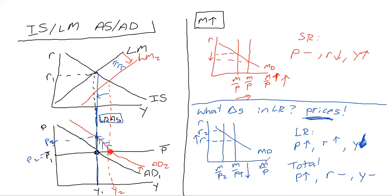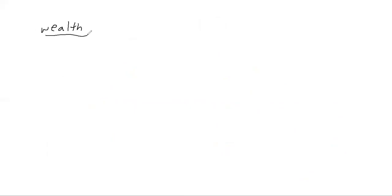That was a straightforward example of how the AS-AD model works with the IS-LM curve. Now let's do another. In this example we're going to see what happens when wealth decreases.